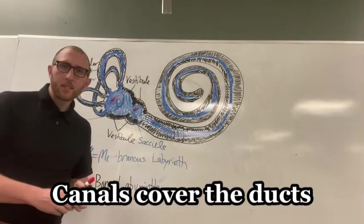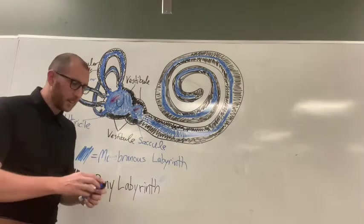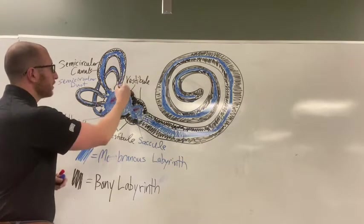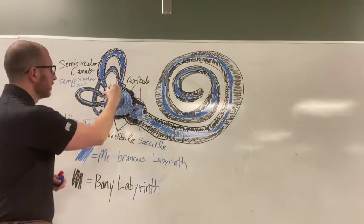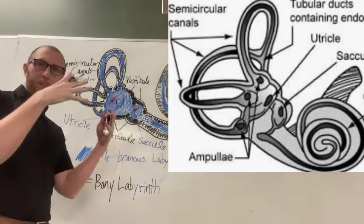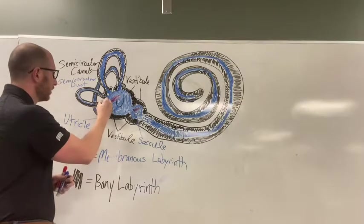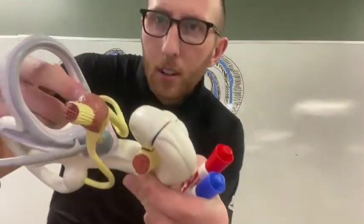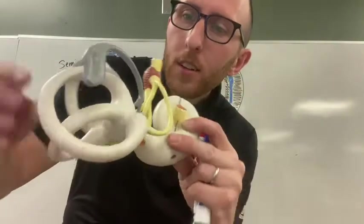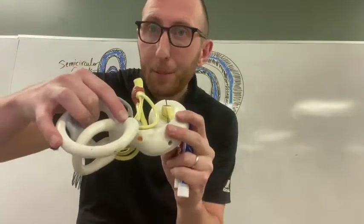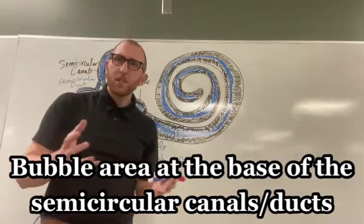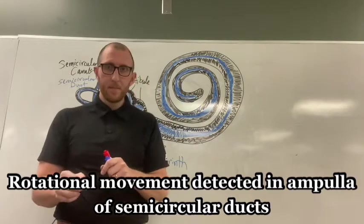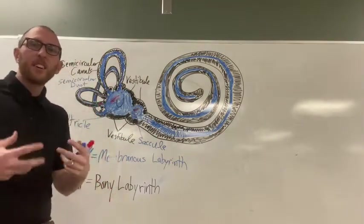At the bottom of each of the three different ducts and canals, you'll notice these bubbles that puff out — those are called the ampula. You can see them on this other model too, where they puff out. The receptor cells that actually detect rotational movement are within the ampula, so the semicircular ducts and canals detect rotational movement.